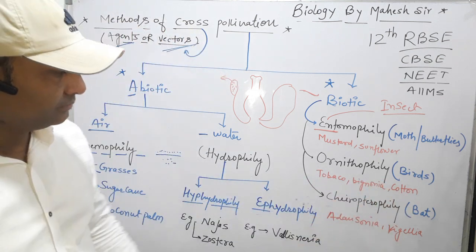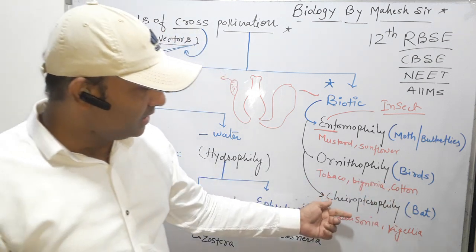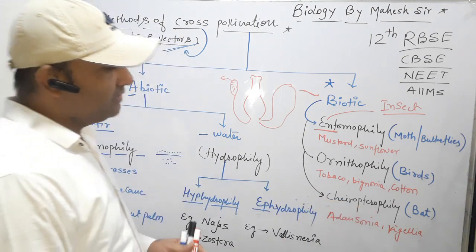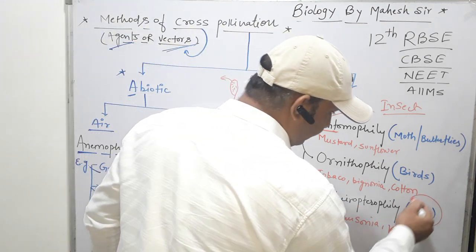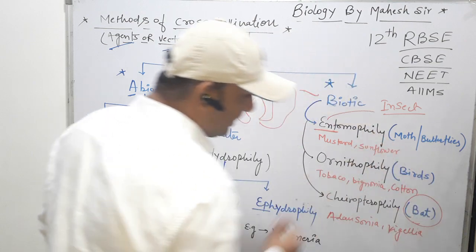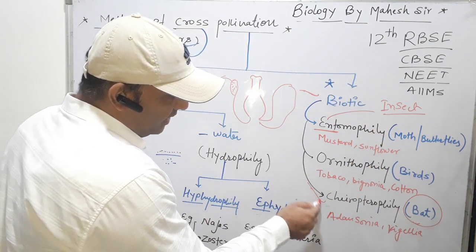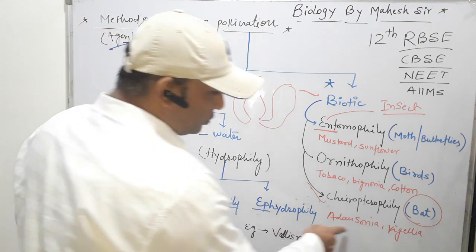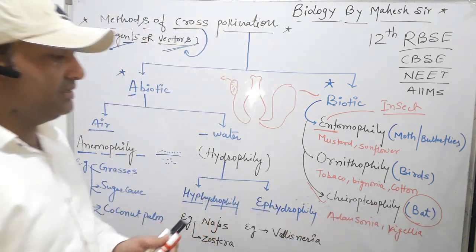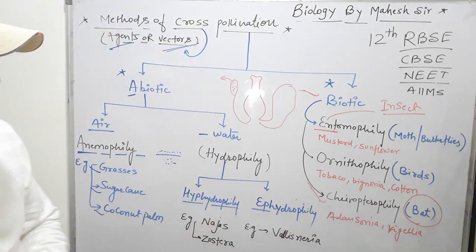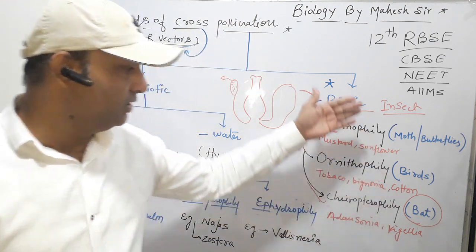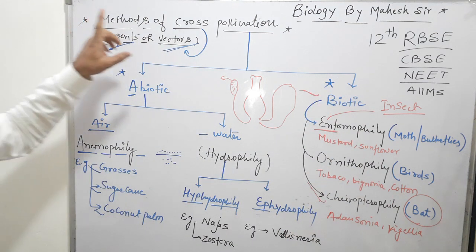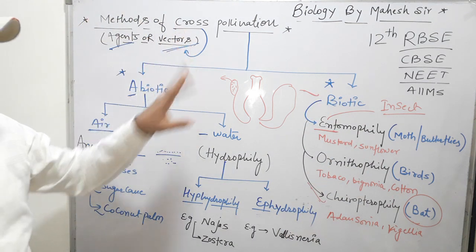The third biotic agent is chiropterophily, which means when pollen grains travel with the help of bats. That term is called chiropterophily. Some examples of chiropterophily are Anthocephalus and Kigelia.